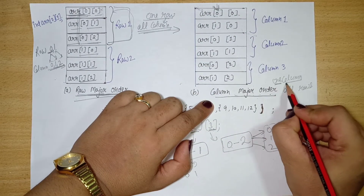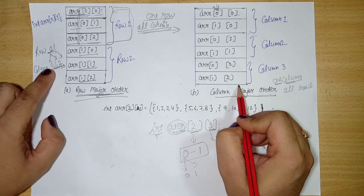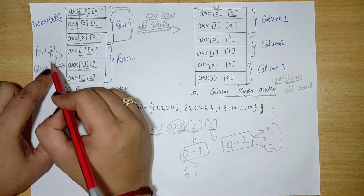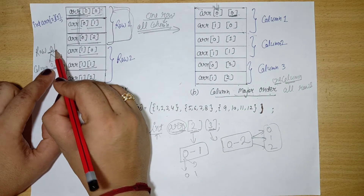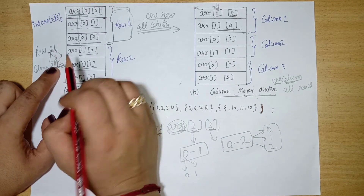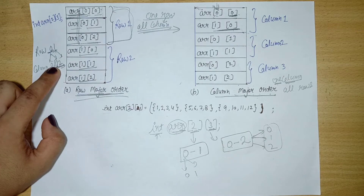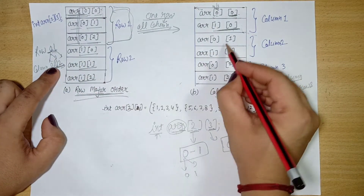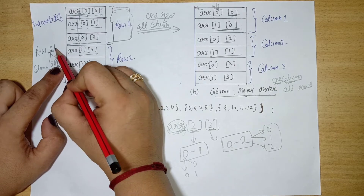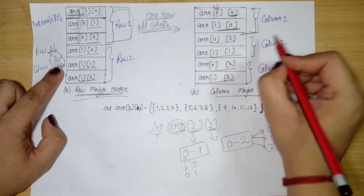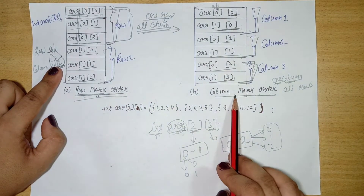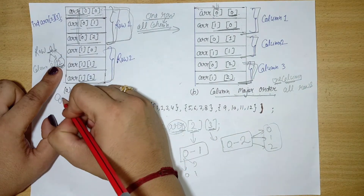In column major order, we first write all rows for column 0: a[0][0], a[1][0]. Then for column 1, we write: a[0][1], a[1][1]. Then for column 2: a[0][2], a[1][2]. So we take one column and write all rows within it before moving to the next column. Most programs are written in row major order, so don't be confused — this is important from a subject point of view.